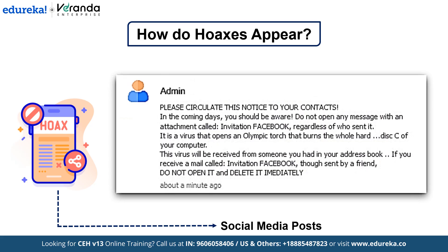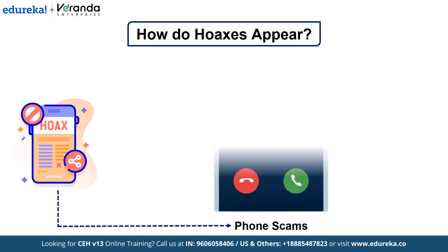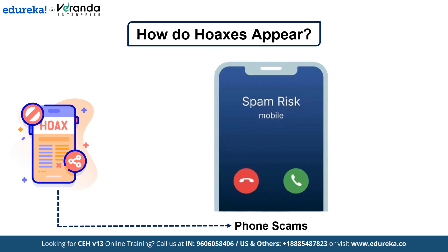Next is social media posts. Sometimes hoaxes spread on platforms like Facebook, Twitter, or Instagram — posts might warn about a new virus that spreads through certain links or attachments, and the message might say something like 'share this with your friends to protect them,' designed to spread the hoax to as many people as possible. Next, text messages might claim your phone is infected and contain a link to a shady website or offer to fix your device for a fee. Phone scams also occur — scammers call claiming to be from a company like Microsoft, saying your system is compromised and asking for remote access or personal information. Regardless of the format, these hoaxes rely on urgency and fear, preying on your emotions to trick you into decisions that benefit the scammer.